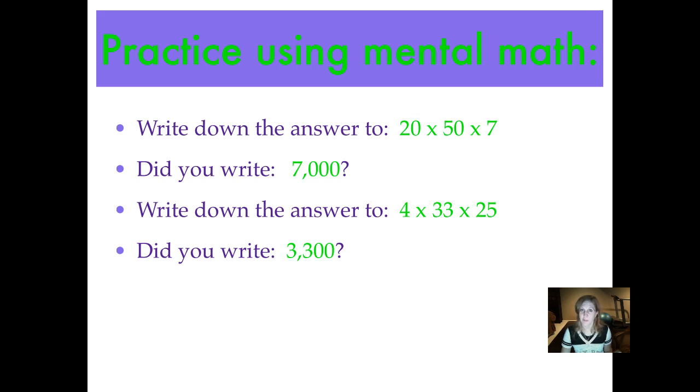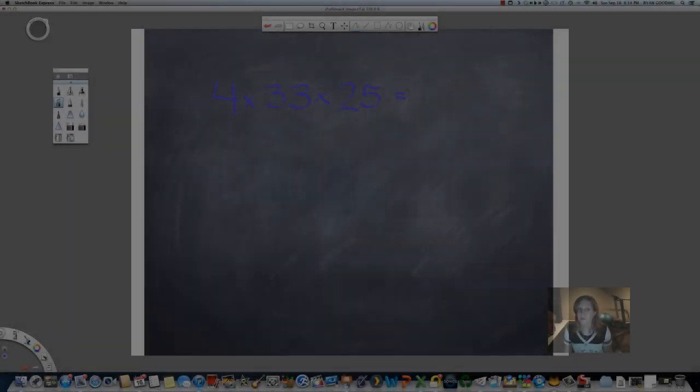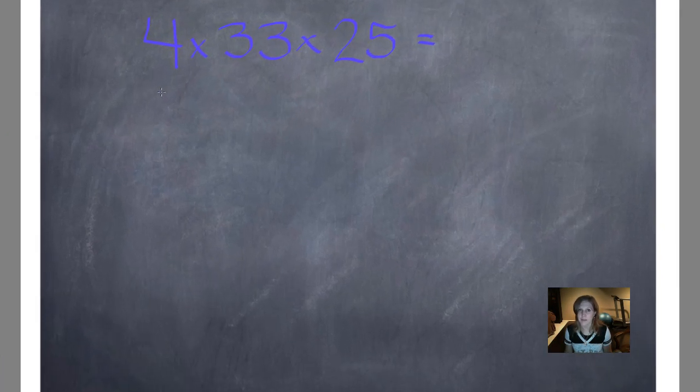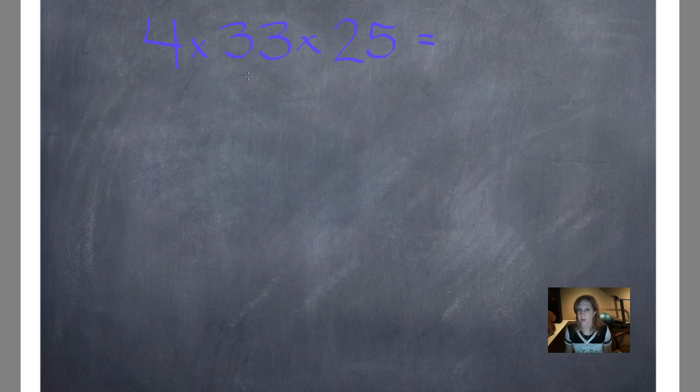Did you write 3,300? Let me show you how I worked that out. As I'm looking at this problem, I'm thinking what multiplication properties could make this easier? 4 times 33 is not a number that I want to multiply in my head. Neither is 33 times 25. No way. But I can multiply 4 times 25 in my head pretty easily, and that actually gives me an answer of 100. So I'm going to use the commutative property to change the order of my numbers to move them around.